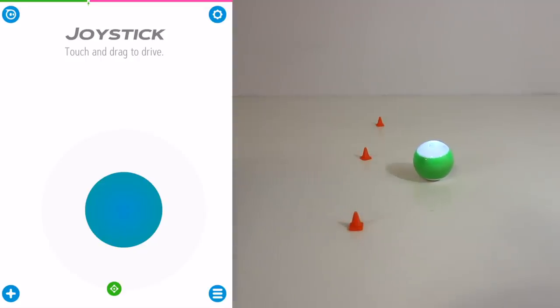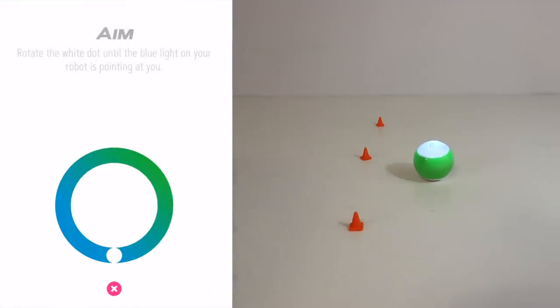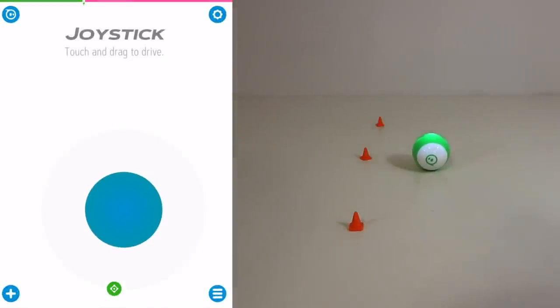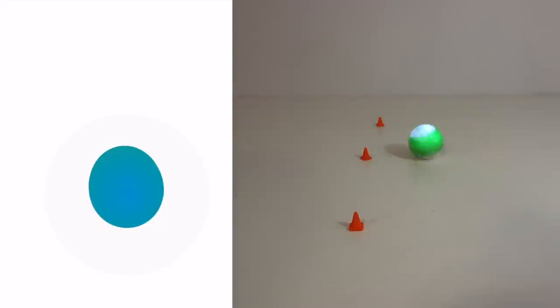Alright, so we're all set and ready to go, so let's go ahead and first line up our droid. So put the blue dot towards us. And now the joystick will allow us to control the droid and just kind of maneuver them the way we want. So let's go around these cones here.